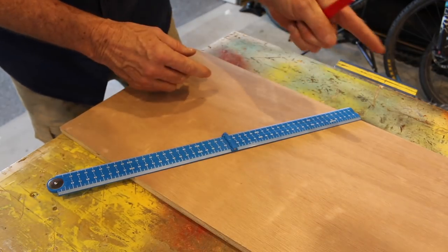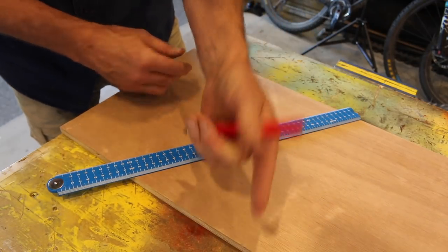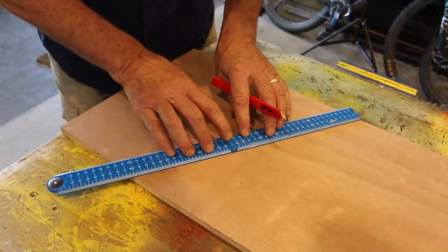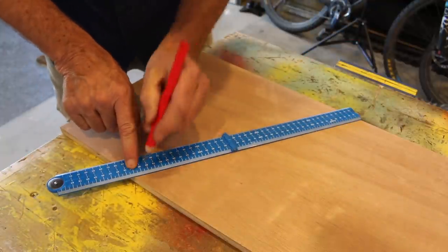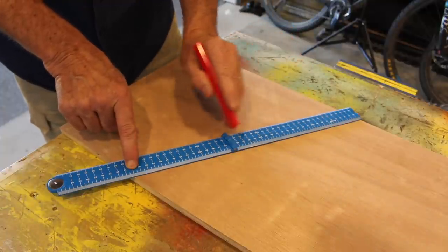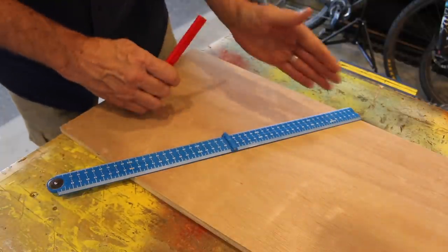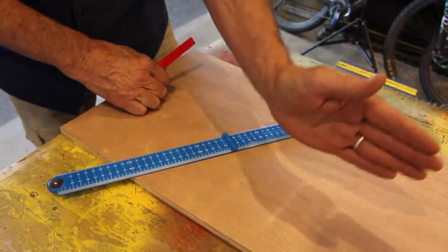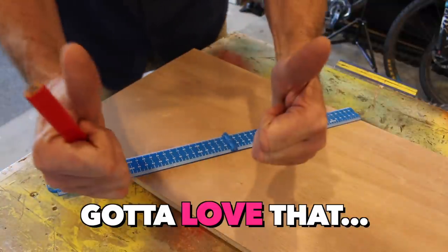Now just say for instance, you want to break this board up into four different segments. All you need to do is with that 400 on the edge right there, put marks at 100, 200 and 300 and you'll finish up with four equal segments. Gotta love that.